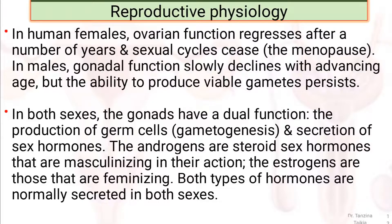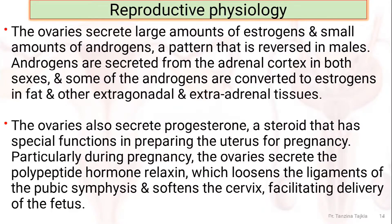Androgens are steroid hormones that are masculinizing in action, and estrogens are those that are feminizing in action. Both types of hormones are normally secreted in both sexes. The ovaries secrete large amounts of estrogen and small amounts of androgens — a pattern that is reversed in the case of male. Androgens are secreted from the adrenal cortex in both sexes, and some androgens are converted to estrogen in fat and other extra-gonadal and extra-adrenal tissues.